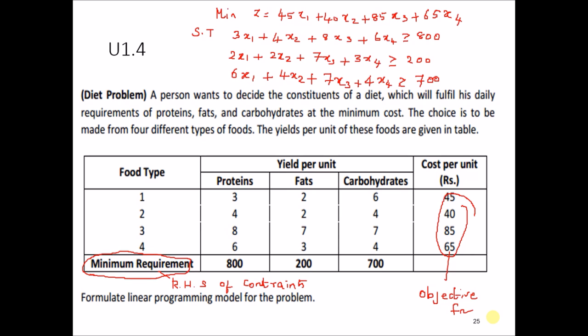As you can see in the table, many students will directly write the three products — protein, fat and carbohydrates — and write something like 3x1 plus 2x2 plus 6x3 less than or equal to 45. They get confused and write this way. They consider the values on the right-hand side as the RHS and they consider the objective function as z equal to 800, 200 and 700 — the minimum requirement.